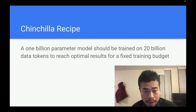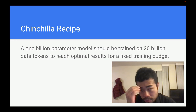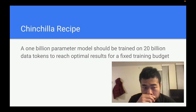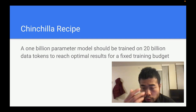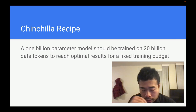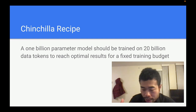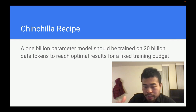The Chinchilla recipe means: if you want to train a model with one parameter, then the model should be trained on 20 tokens. So if the model has one billion parameters, it should be trained on 20 billion data tokens — always a 1-to-20 ratio. Research from DeepMind found that at this 1-to-20 ratio, the model is most well trained. If you train on fewer tokens, the model is under-trained. If you train on more tokens, the model won't perform better because the parameter count isn't sufficient.